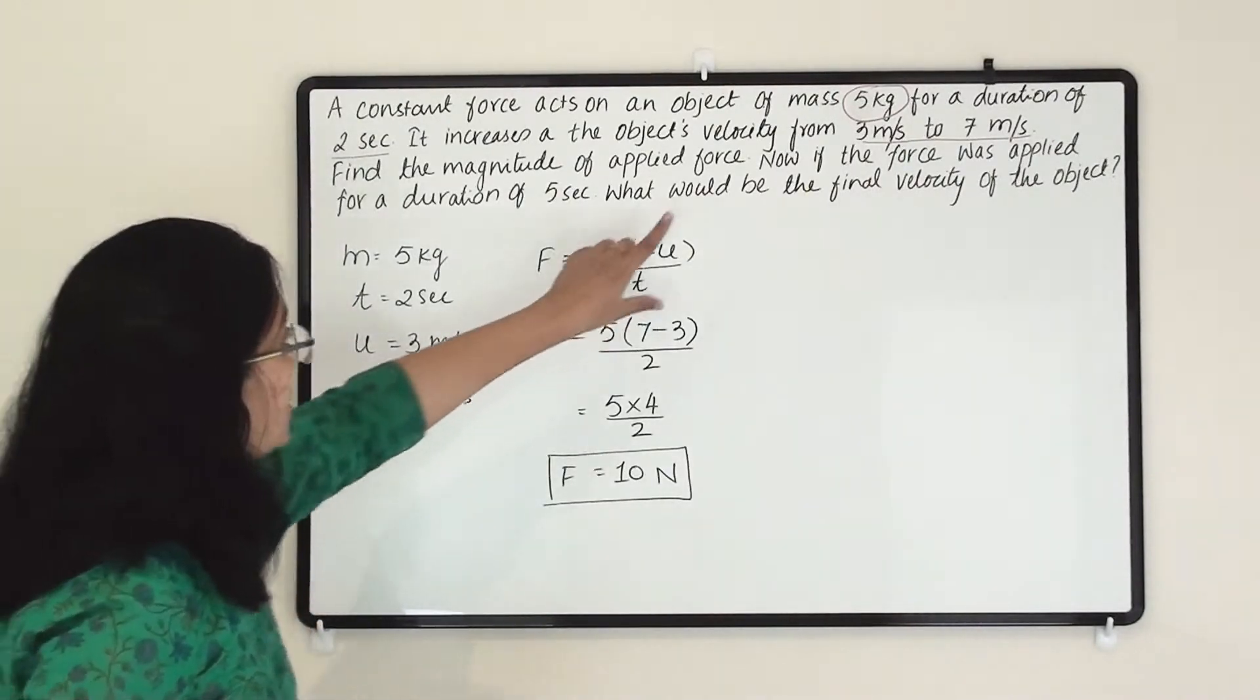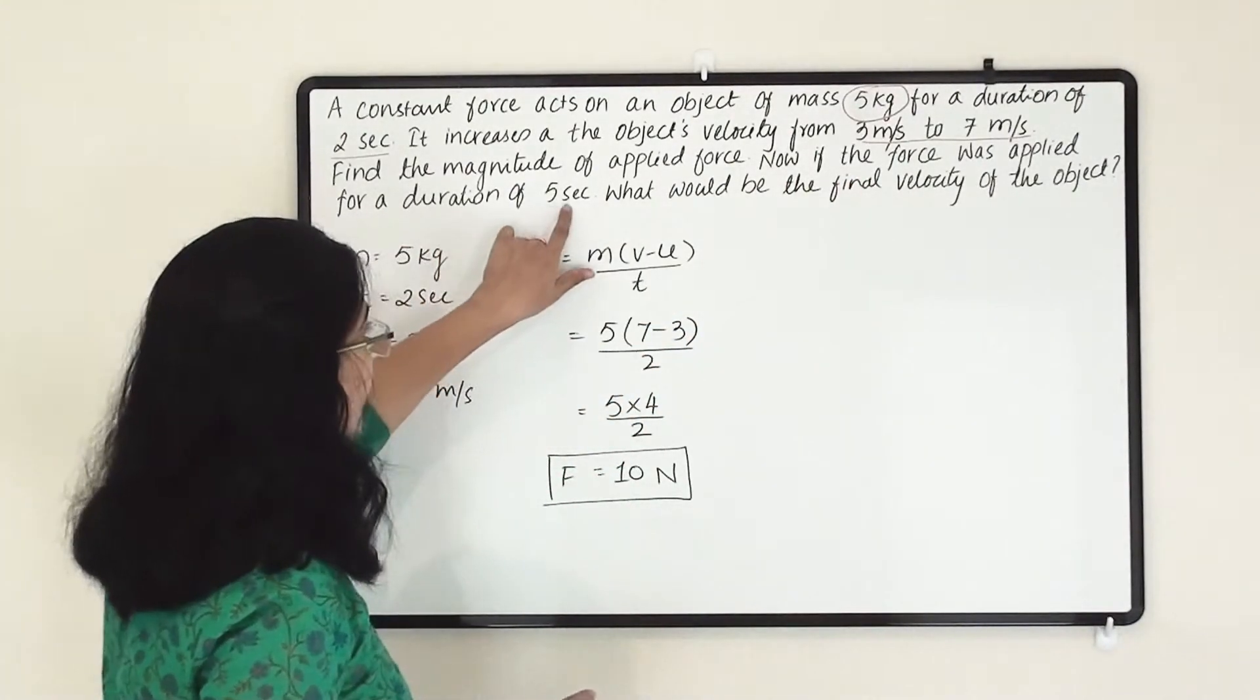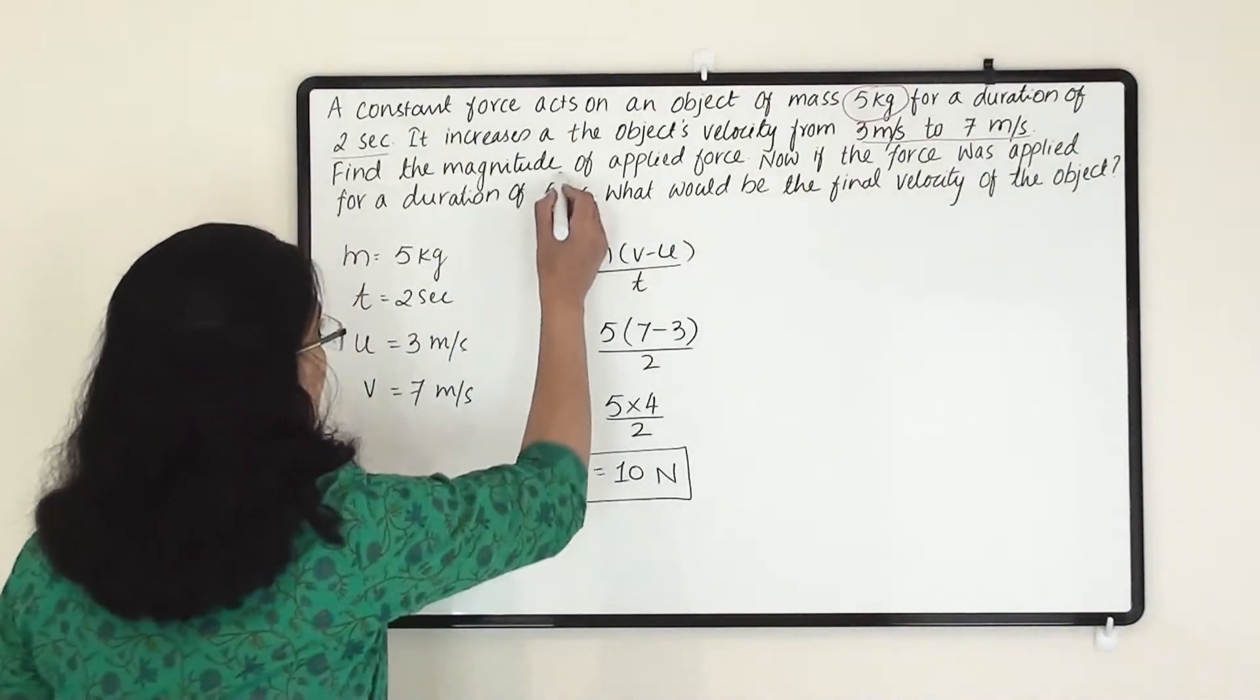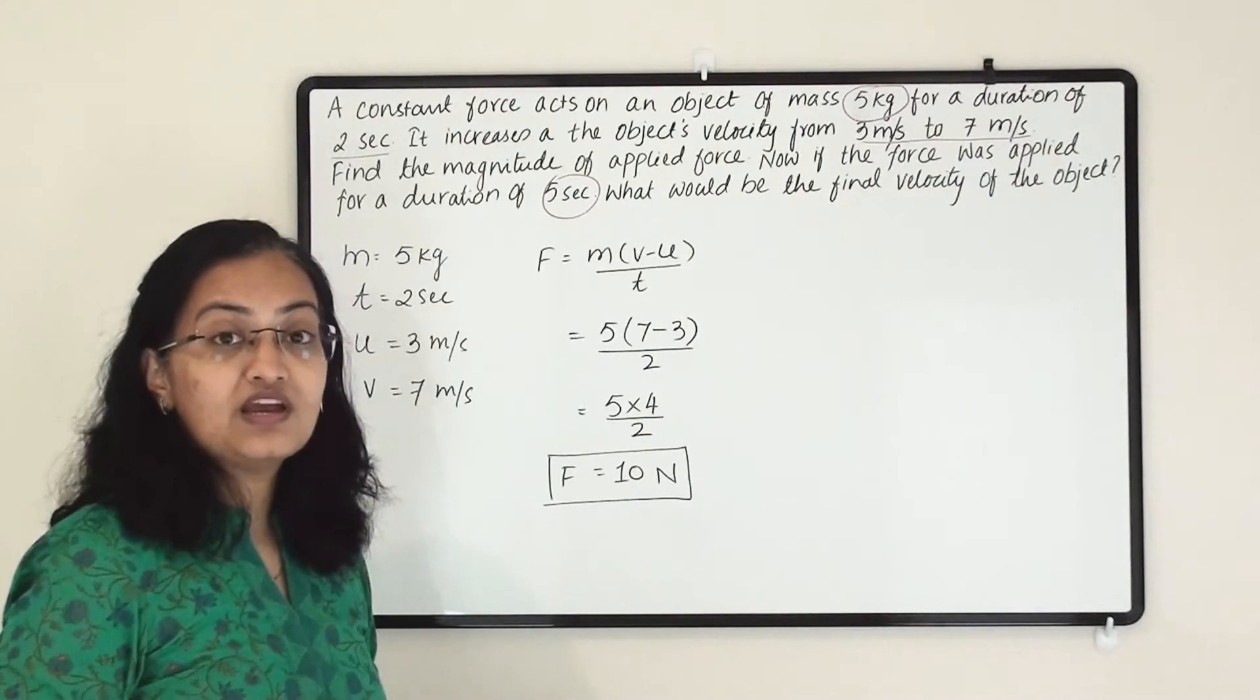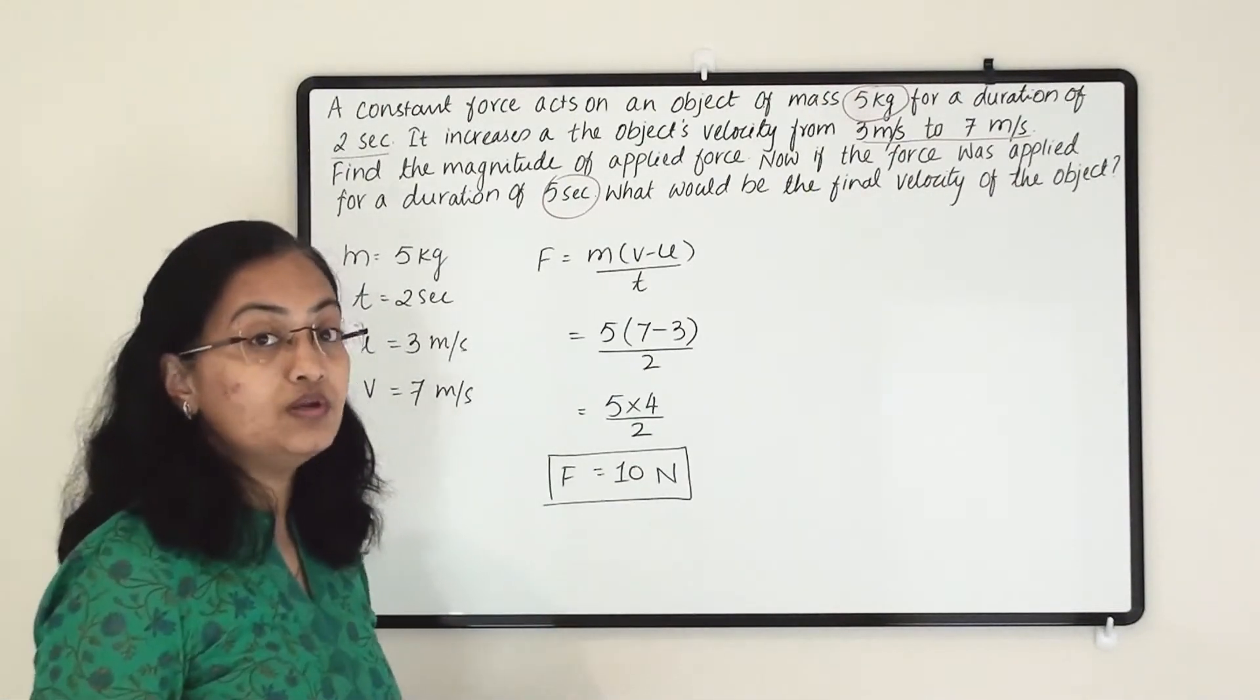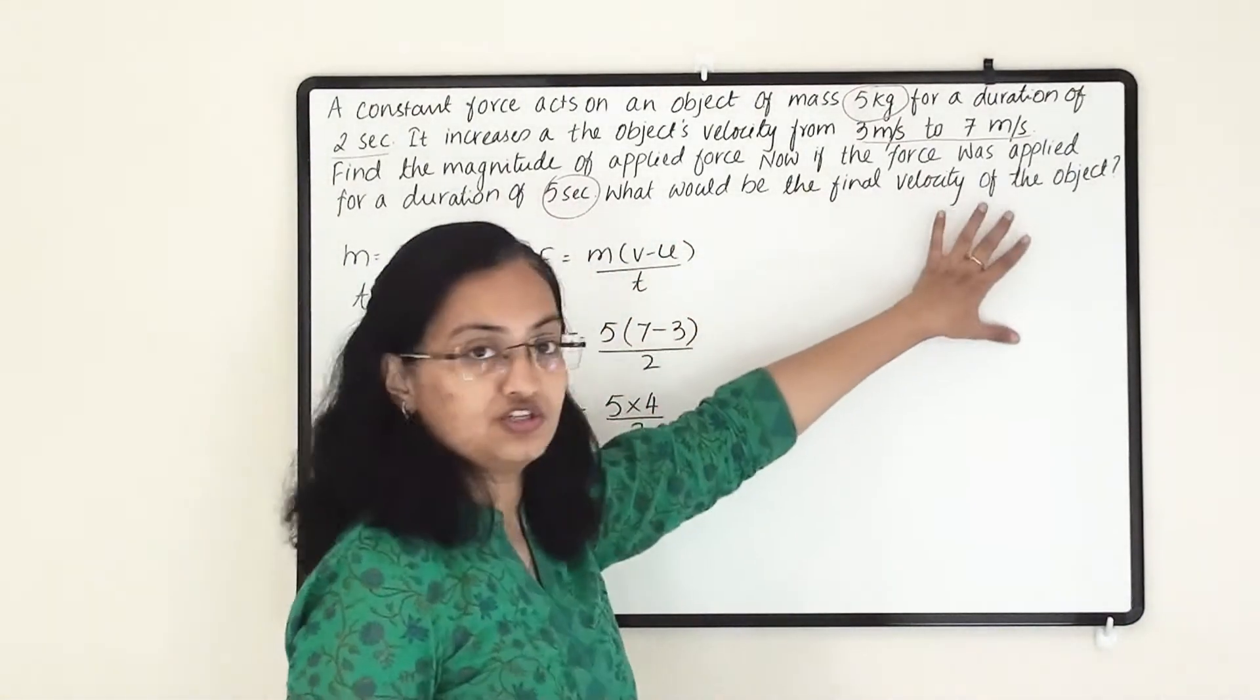Now second question. If the force was applied for a duration of 5 seconds, so here they are changing the time. Earlier we were applying for 2 seconds. Now the same force we are applying for longer period of time. Then what will be the effect? What would be the final velocity of the object?